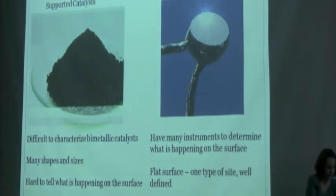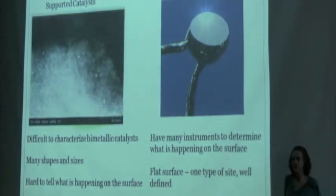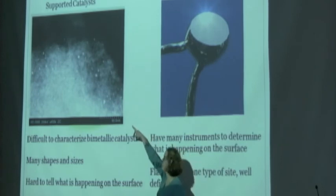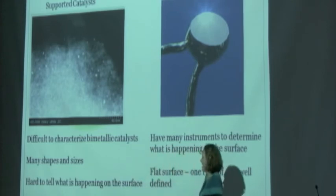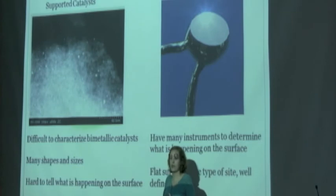They're difficult to make. When we zoom in, you can actually see the little metal particles—they're the bright spots on the support. That support could be something like carbon, like graphite.